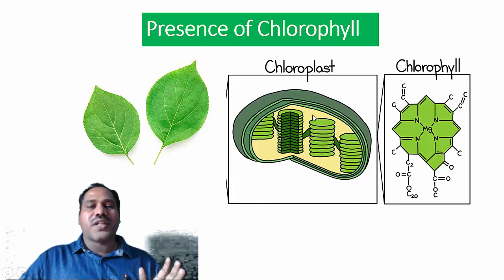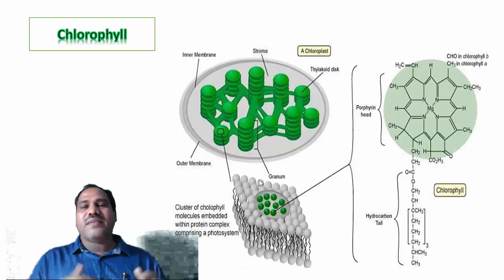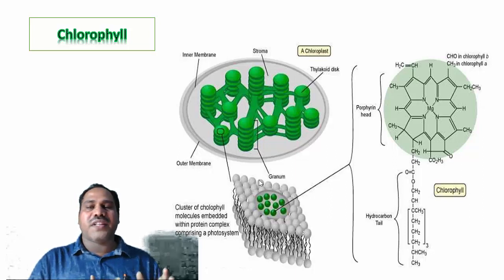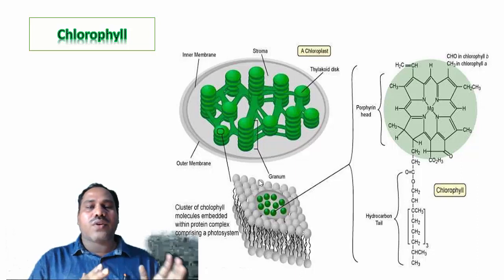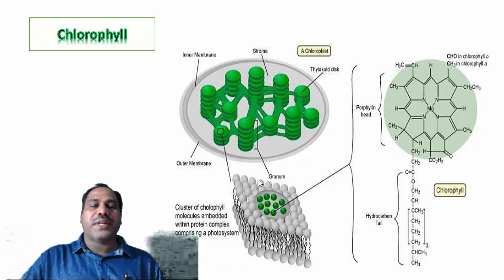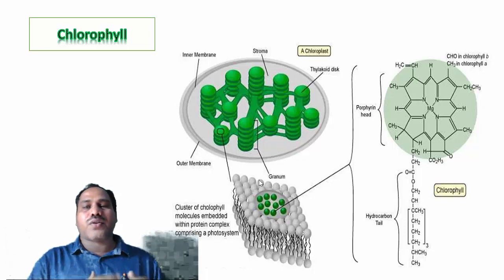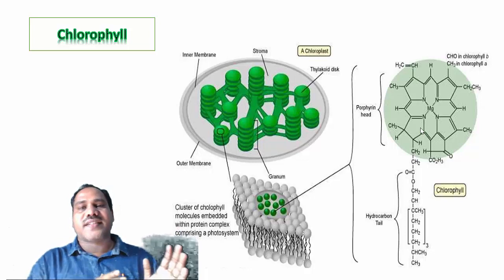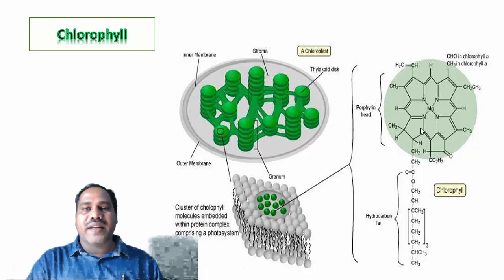Within the chloroplast, chlorophyll molecules are present in the thylakoid membranes. There are different types of chlorophyll molecules present in plants: chlorophyll a, chlorophyll b, and chlorophyll c. In higher plants, chlorophyll a and chlorophyll b are abundantly present and are found in the photosystems.